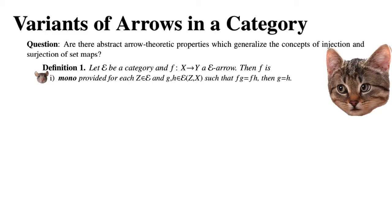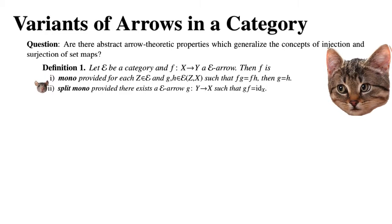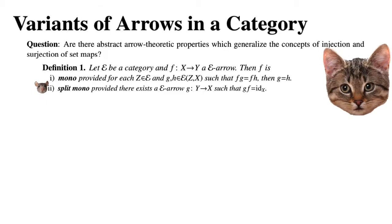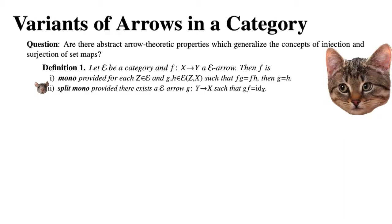The arrow F is split mono provided there exists an E-arrow G: Y → X such that GF equals the identity. Sometimes this is called a section.